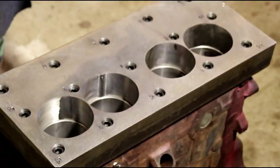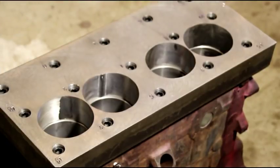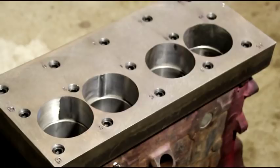Okay, now that torque plate is duplicating the stress in the block that the cylinder head will put on it. We'll hone it with that stress on there, so when the cylinder head goes on our cylinder heads will be perfect. Now this block is getting 60 over pistons, and I left about four thousandths for the honing process.